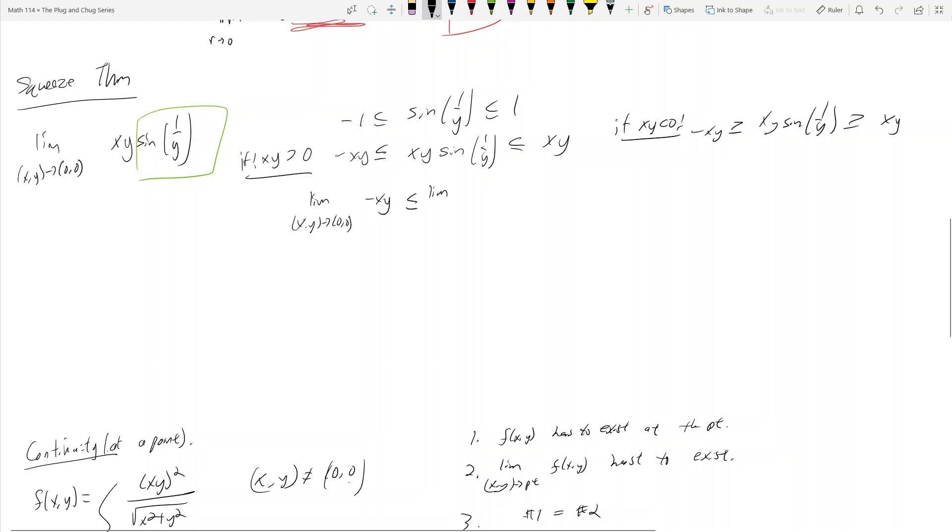And then inside here, I got the limit as x,y approaches 0,0 of xy sin(1/y). And on the right hand side, I got the limit as x,y approaches 0,0 of xy.